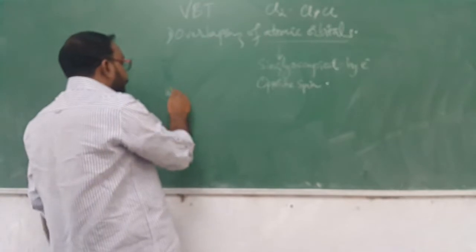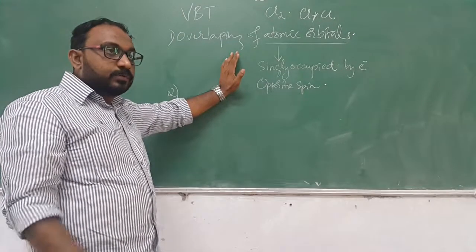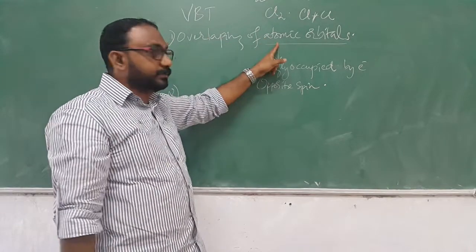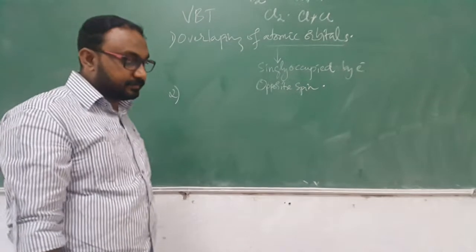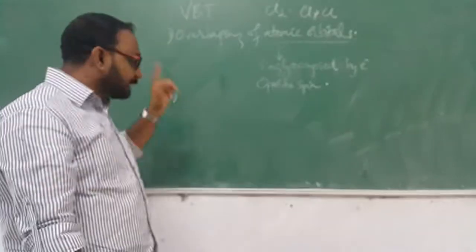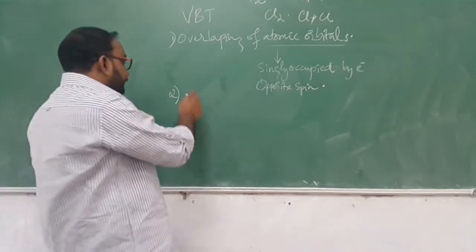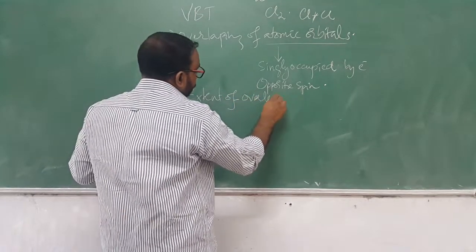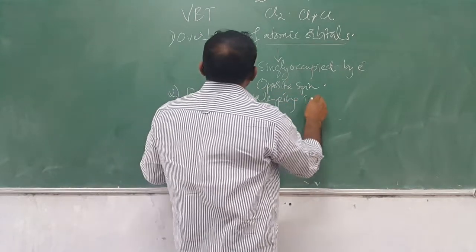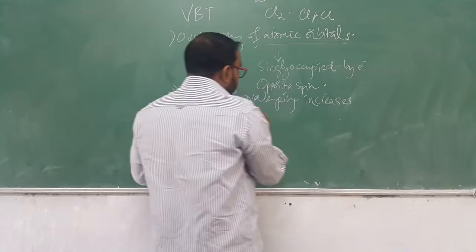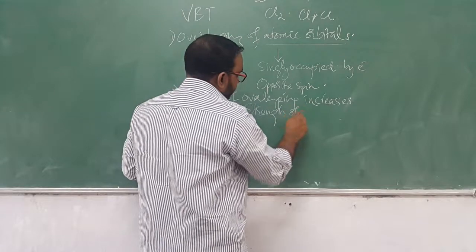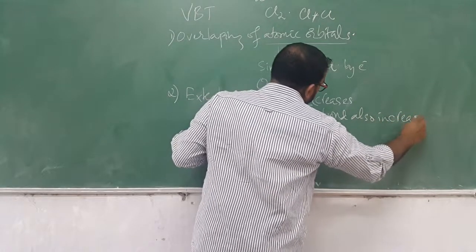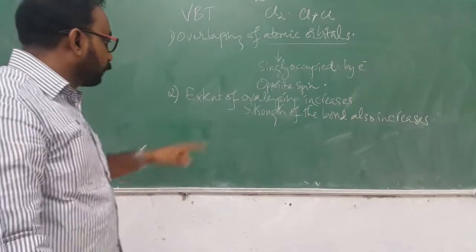A second point in valence bond theory: once a chemical bond is formed, the energy is lower than that of the separate atoms. Even though atomic orbitals overlap, they retain the identity of the atomic orbitals. Furthermore, as the extent of overlapping increases, the strength of the bond also increases. To understand this point, you need to know the types of overlapping depending on the type of atomic orbital involved.